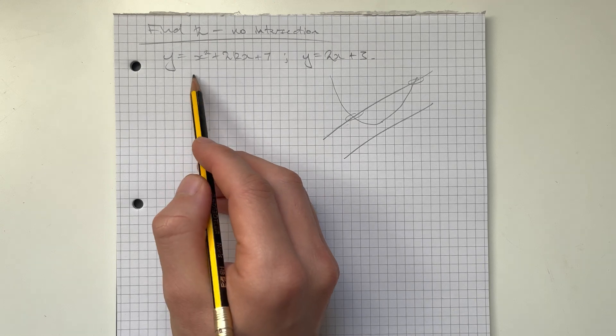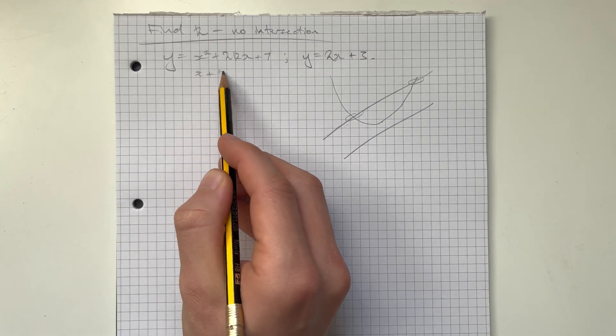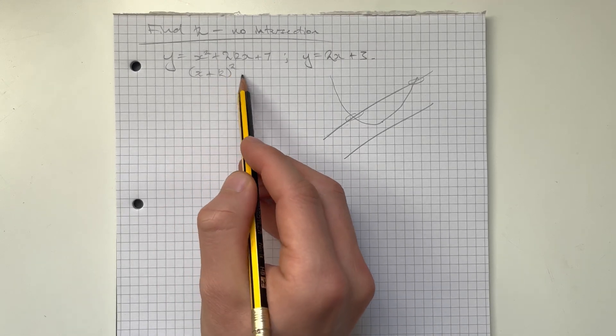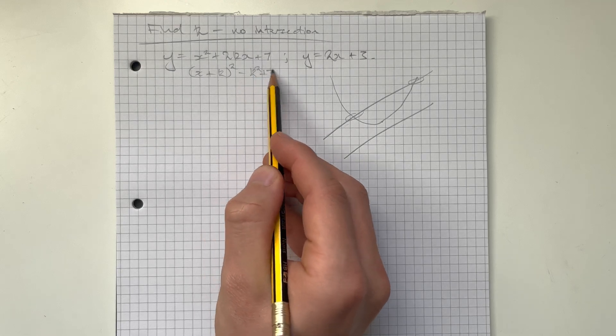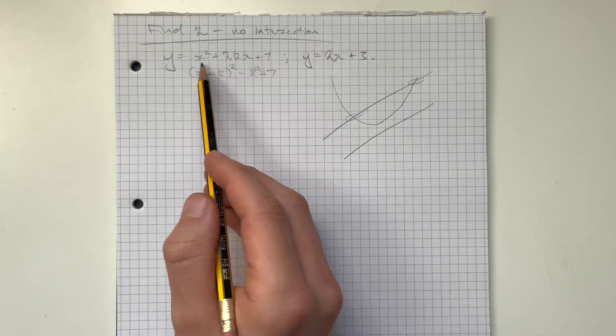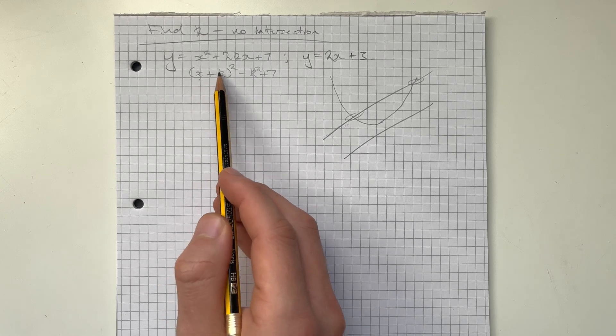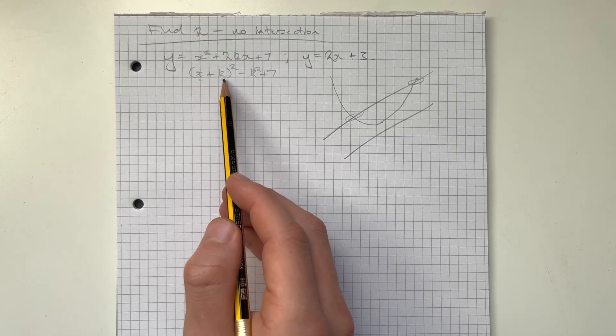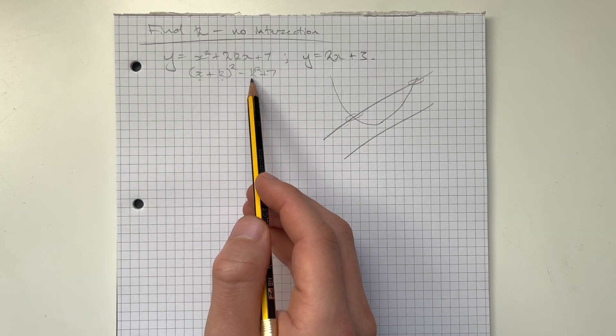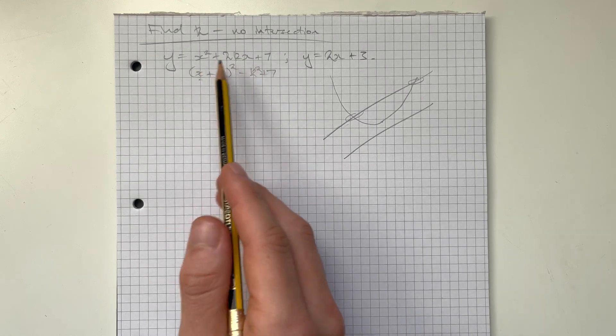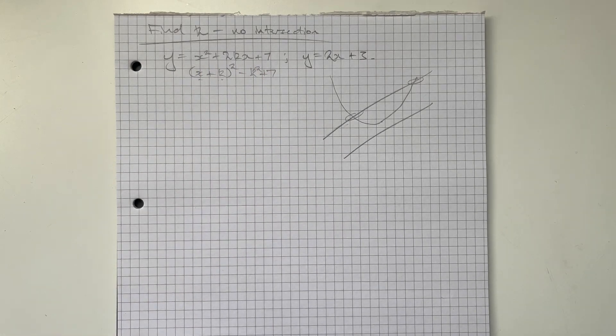If we do complete the square on this, what we can see is that x plus k all squared minus k squared plus 7 is a way to rewrite this. So if you expand this back out, we'll get x squared plus two times kx, which is the middle, plus k squared. When we subtract the k squared again, we're left with just the 7. So this is the same way. And we can think about the transformation this makes then.